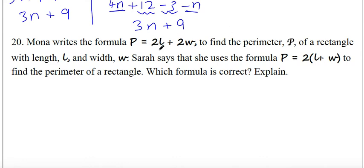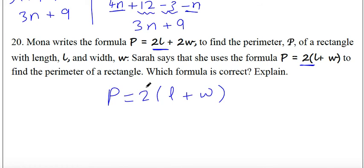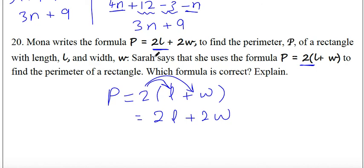Question twenty: verify whether the two perimeter formulas are correct. For p equals 2(l plus w), using distributive property gives 2 times l plus 2 times w, which equals 2l plus 2w — exactly matching the first formula. Thanks everyone, and best wishes to you all. Assalamu alaikum.